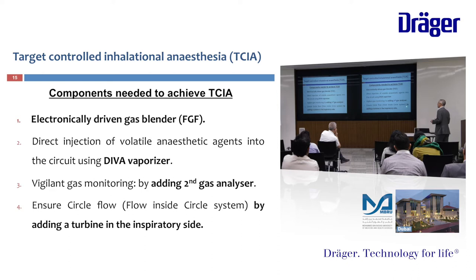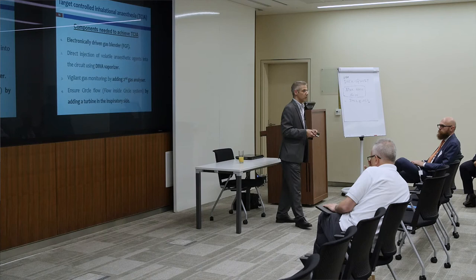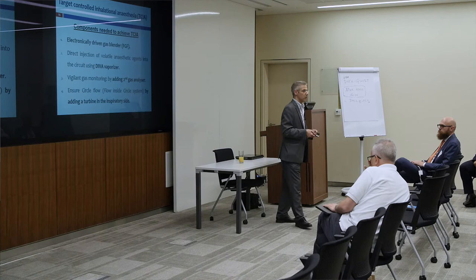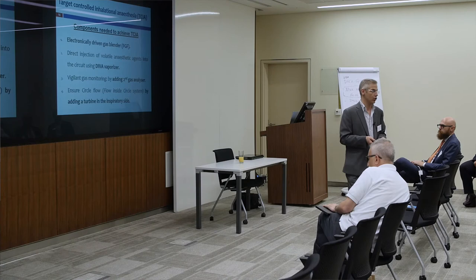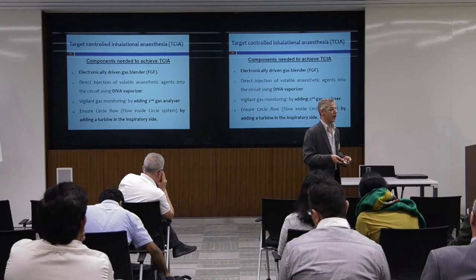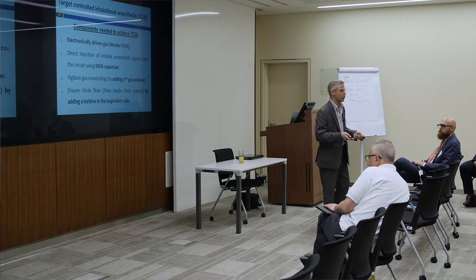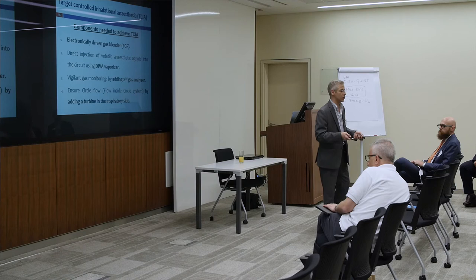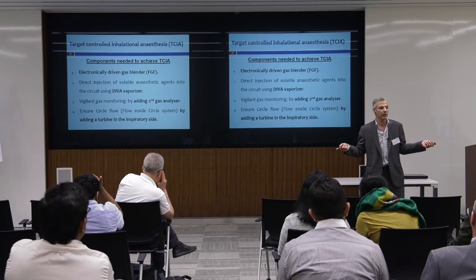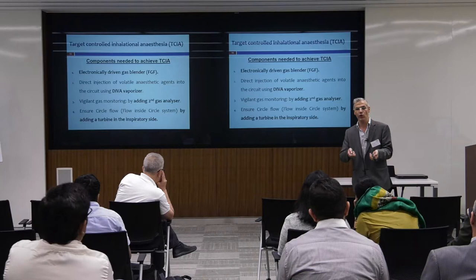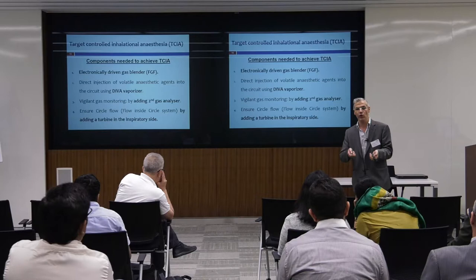We need to ensure circle flow inside the circle system by adding a turbine on the inspiratory side. As our Draeger team mentioned during the symposium, it is the only anesthesia machine by Draeger having a turbine, and it can supply up to 250 liters per minute. It's controlled automatically and we never reach this limit — it's just like having a Ferrari that can reach 360 km/h but you drive at 140 or 160. That's just an option available. It can give all the advantages of an ICU ventilator.